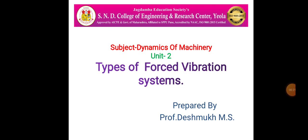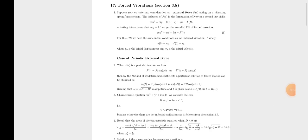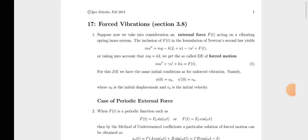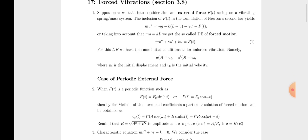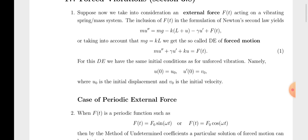In this lecture we will see the types of forced vibrations. The force of vibration is when we apply some external forces over the system — that is called forced vibration. For the formulation, we take the equation of motion: m times x double-dot equals m·g minus k·(l + u) minus ζ·u-dot plus f(t).